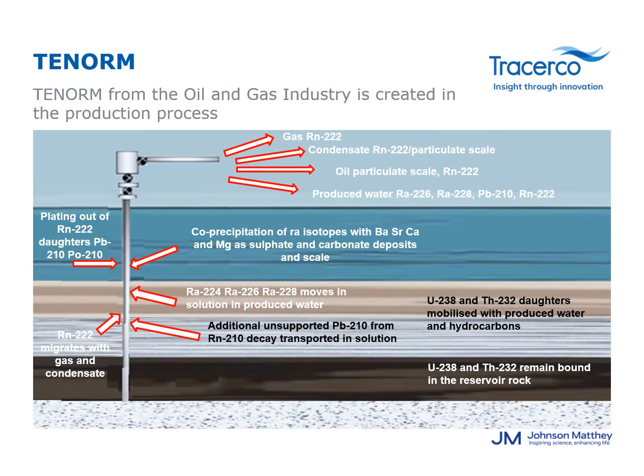The NORM that we encounter in process equipment comes largely from the decay of uranium-238 and thorium-232, which are both widely distributed in the geology of the reservoir rock. Both these parent radioisotopes decay over billions of years to produce a series of daughter radioisotopes, including radium-226, radium-228, radon gas, lead-210 and polonium-210.